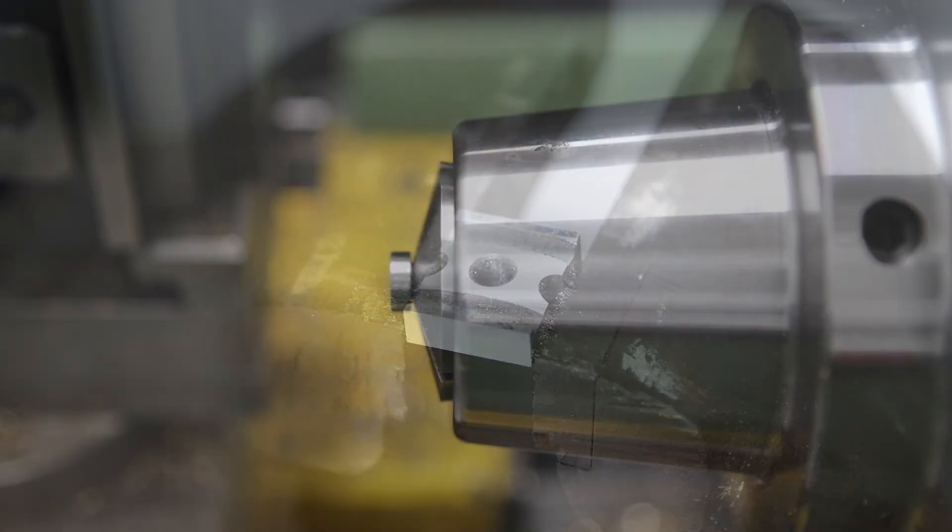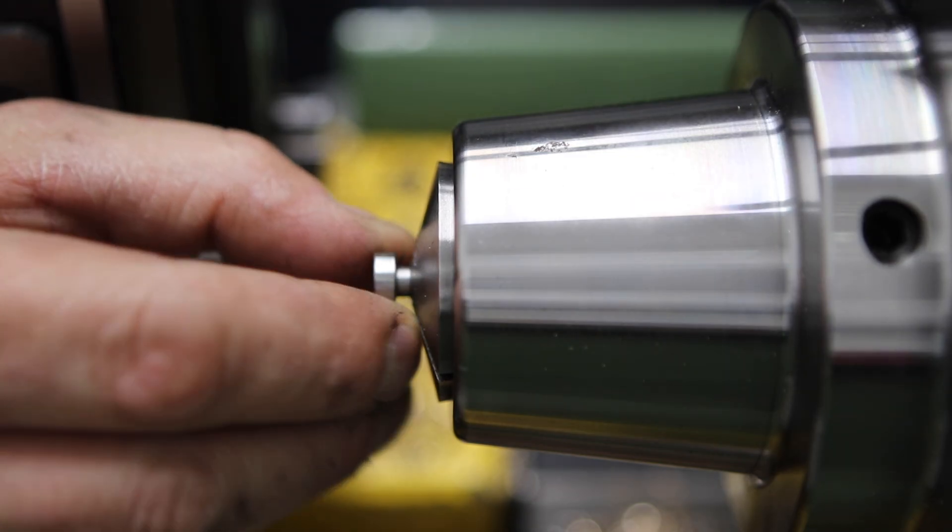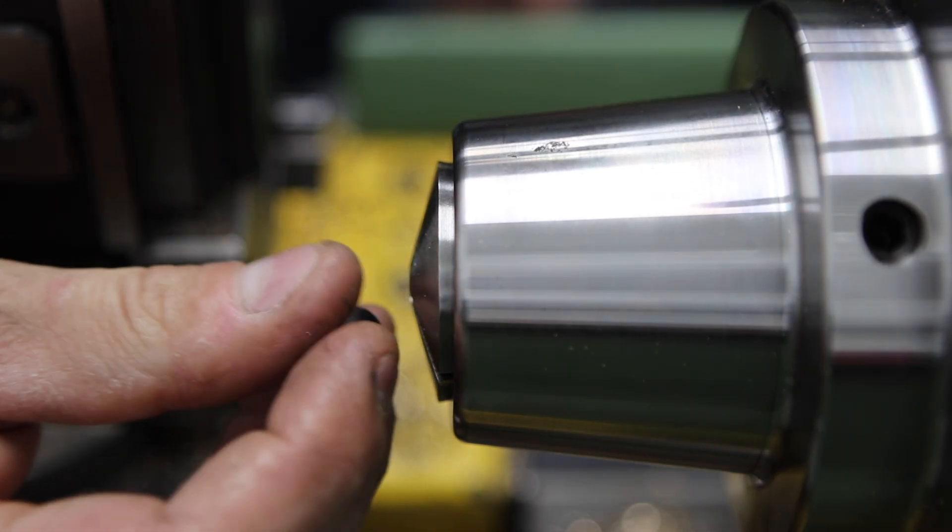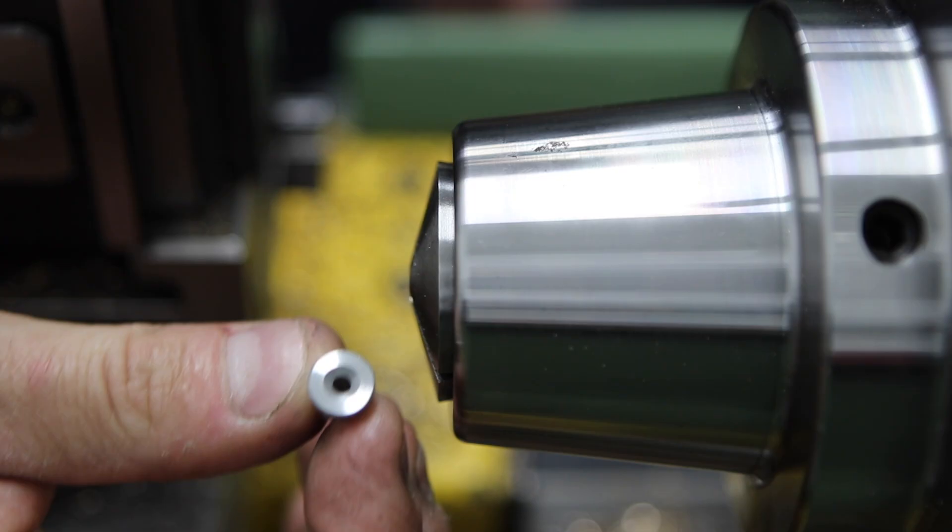The final part we're going to make before assembly is the drill bushing. Now I've just turned this out of silver steel or drill rod, a simple turning job, a hole in the middle with a big chamfer.